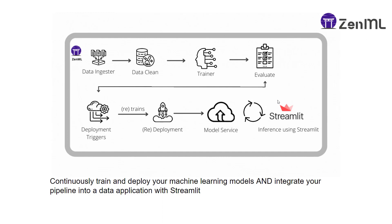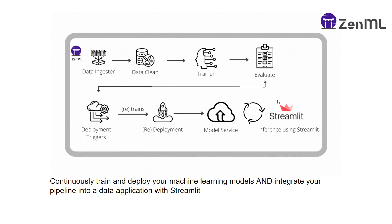We have a data application like Streamlit which we can use for inference, and this continuously updates — it always fetches predictions from the latest model service, not any old trained model. This is the crucial part: it's a continuous deployment and inference pipeline. When you give product details, the inference pipeline fetches the latest service from the whole pipeline and gives you your prediction.